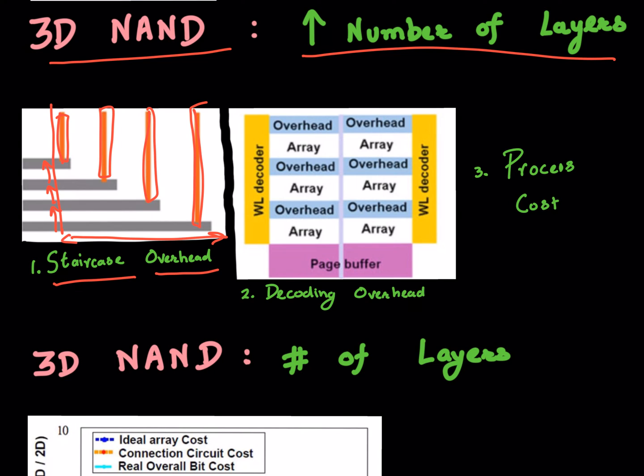The other thing is the overhead area associated with decoding. If you have more of these layers, you would have more number of word lines, and the resistive and capacitive parasitic components associated with these word lines would be higher.